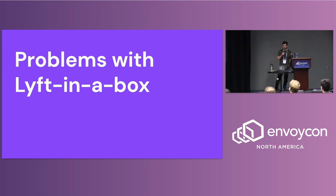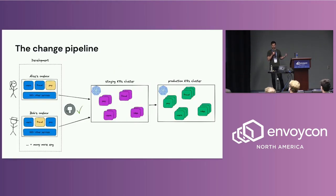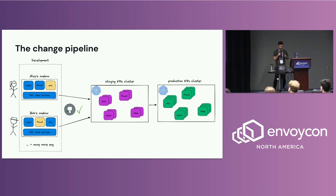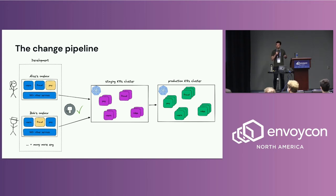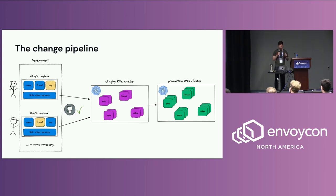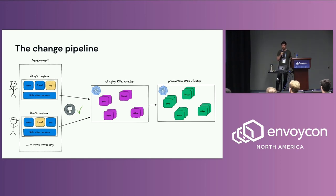If we rewind about two years, this is what our change pipeline used to look like. In development, each user would have their own what we called a 'one box' — basically a very large EC2 instance that would run the entirety of the Lyft system. They would change whatever they wanted in their services in a completely sandboxed environment. When done, they'd create a pull request, get a plus-one from a teammate, and deploy to our staging and production Kubernetes clusters. Notably, development and staging/production ran on very different stacks.